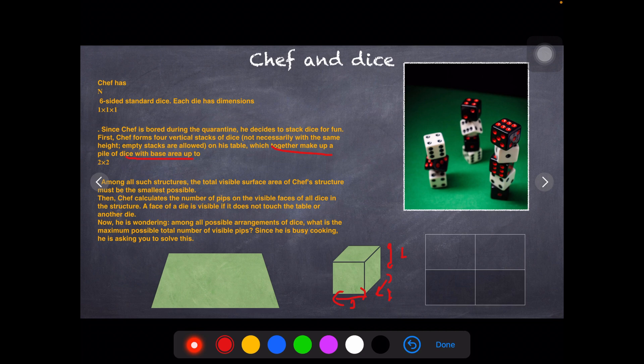These stacks sit on the table which together make up a pile of dice with a base area of two by two. Now look at this diagram - this exactly shows what it means from a top view. The surface area it takes is one, one, one, and one. In each of these boxes there are piles; it can be empty or not empty.